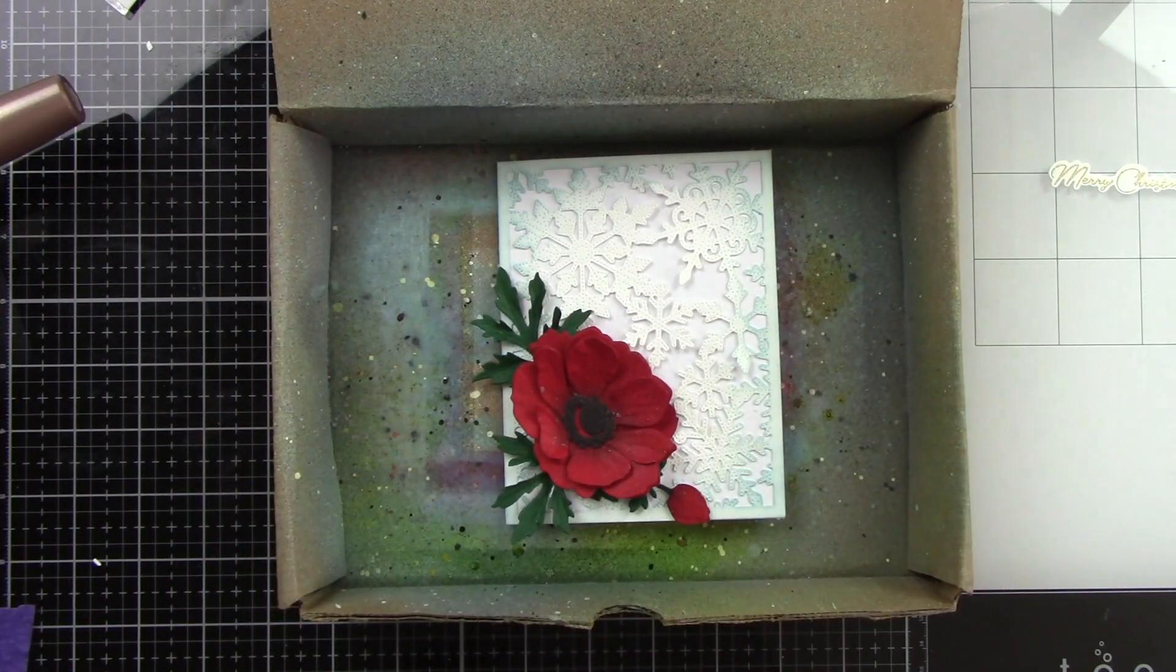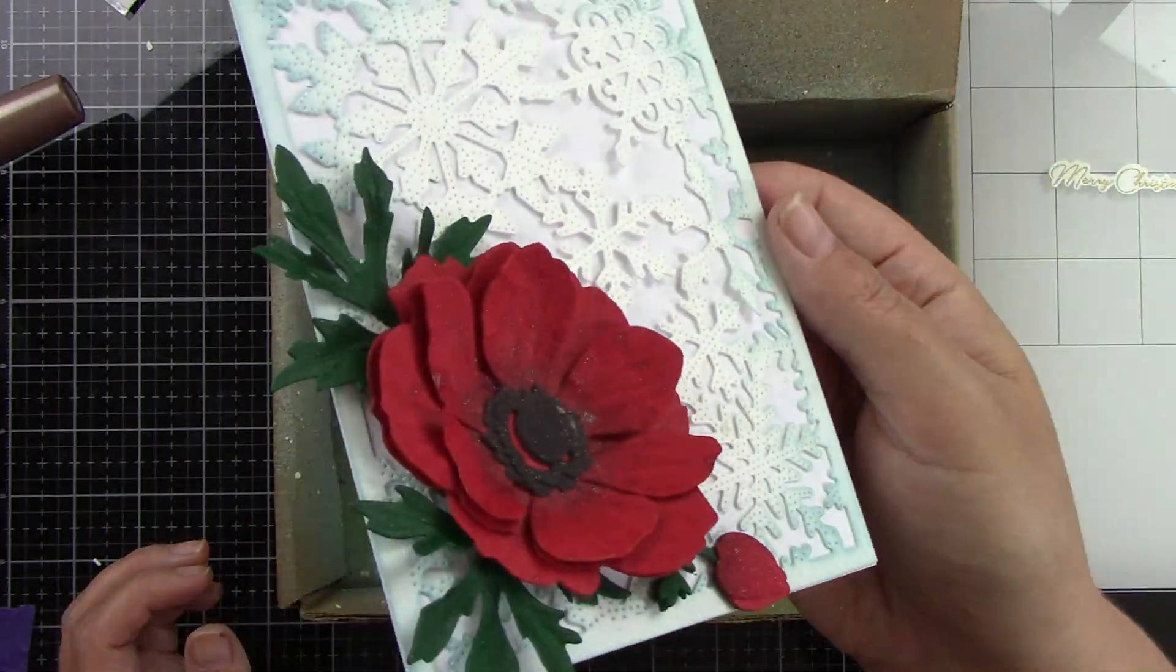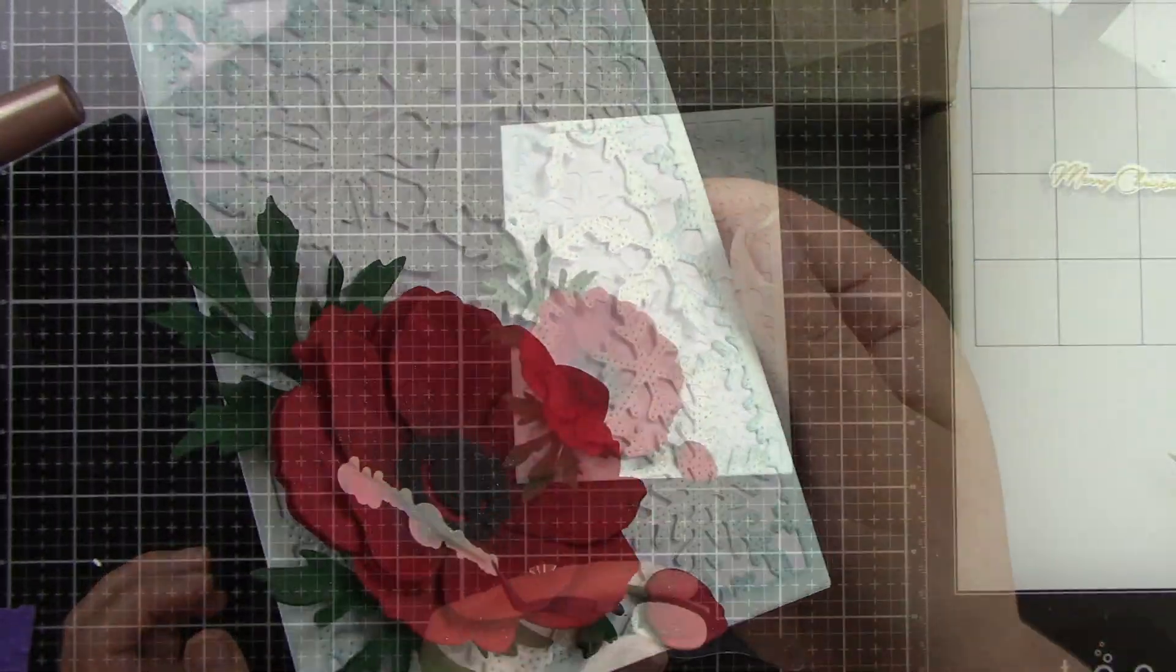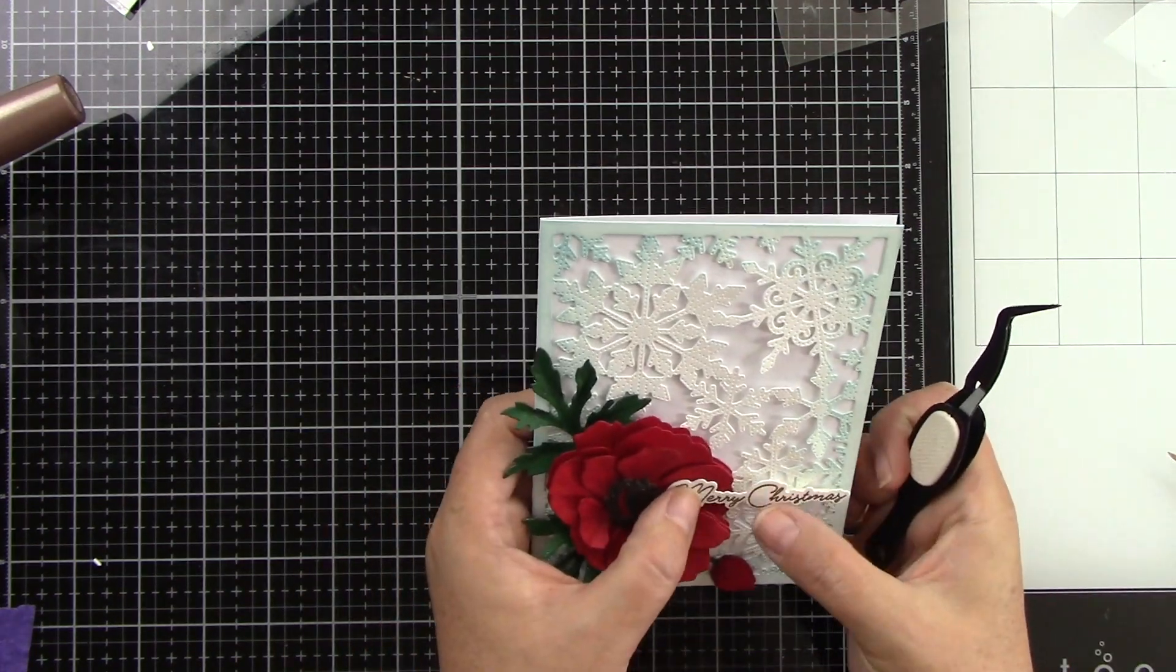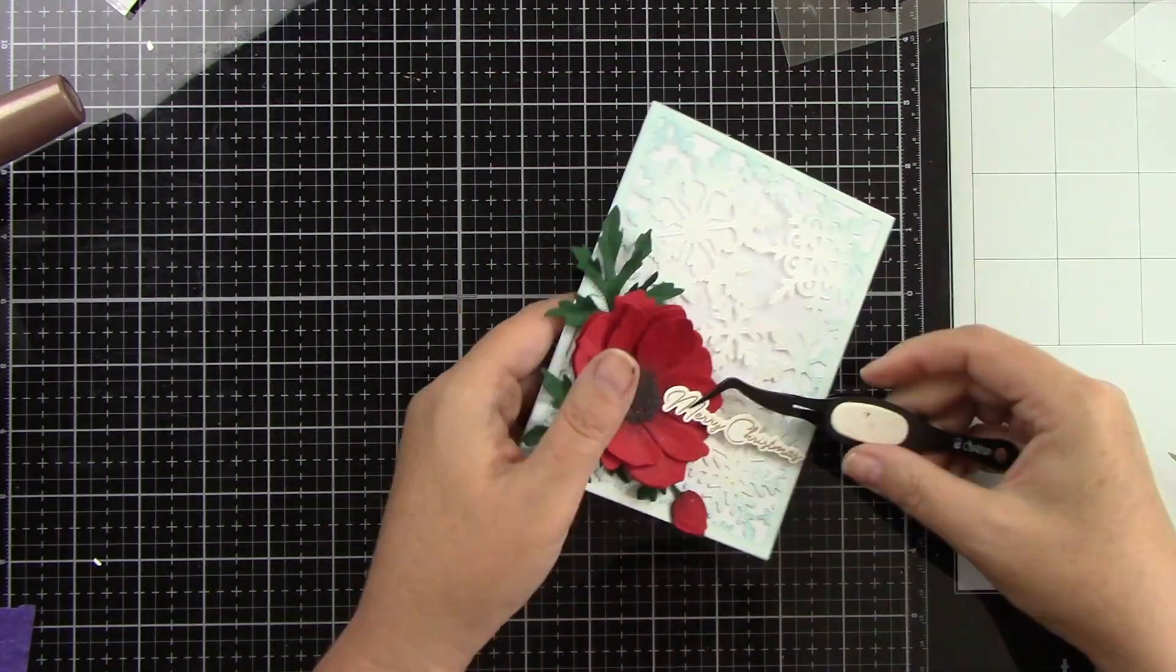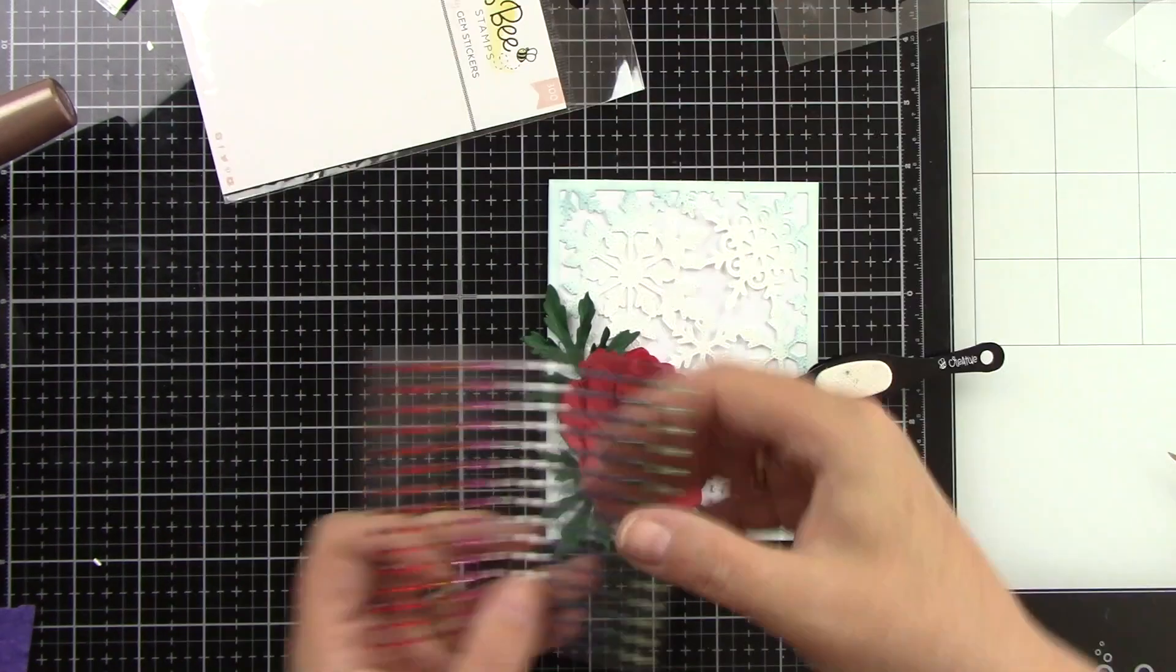Then I'm going to come back in with that little shimmer spray and spray my flower because I just felt like that needed to have some shimmer on it too. Now I have two layers of foam tape on the right side of my sentiment and then a little bit of liquid glue on my left side to adhere to the flower. I'm just going to use my tweezers to hold that in place.